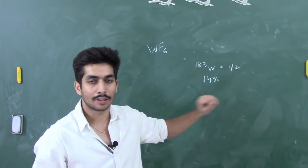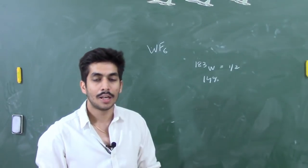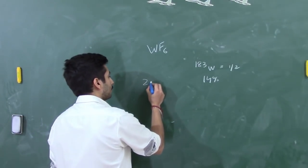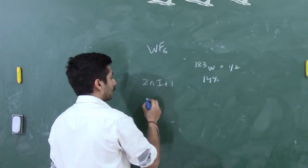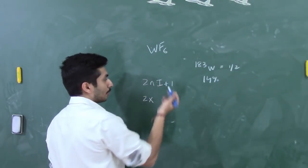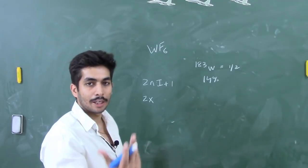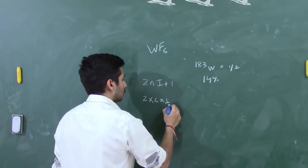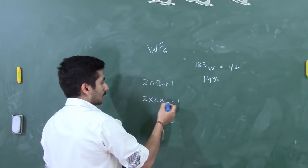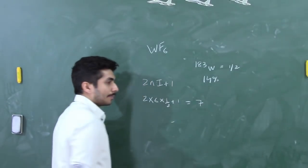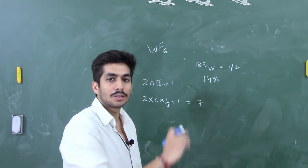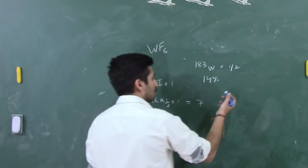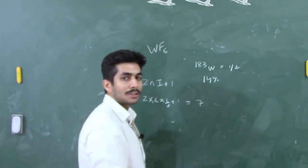If I talk about the tungsten NMR of WF6 and use the basic formula 2nI + 1, where n is the number of fluorine atoms (since fluorine is NMR active and will couple with tungsten), there are 6 fluorines: 2 × 6 × (1/2) + 1 = 7. So we will see a septet — 7 lines — in the 183W NMR.